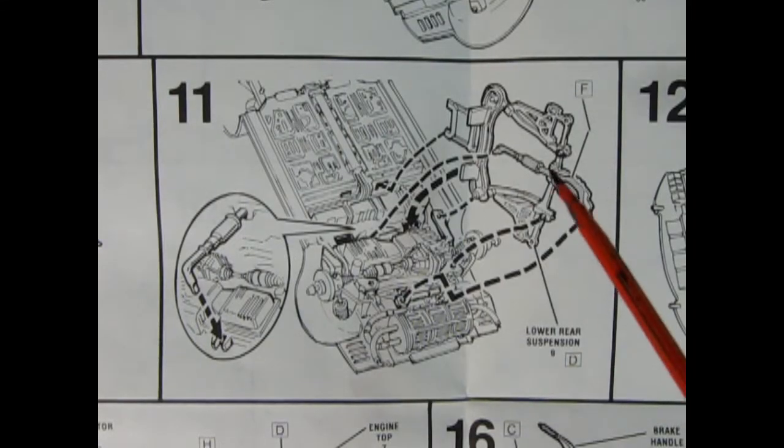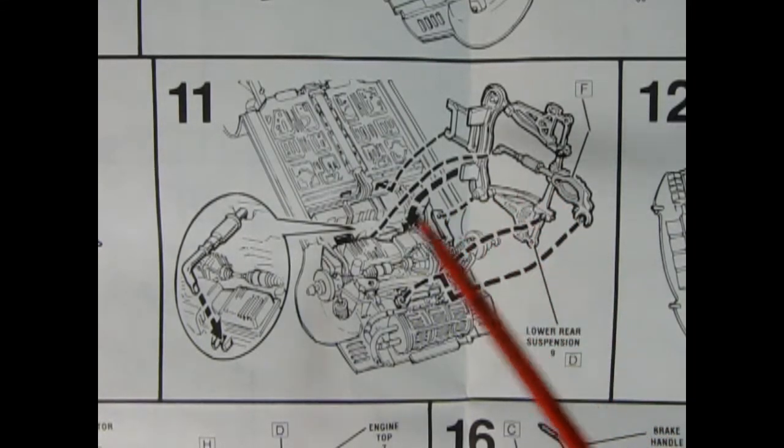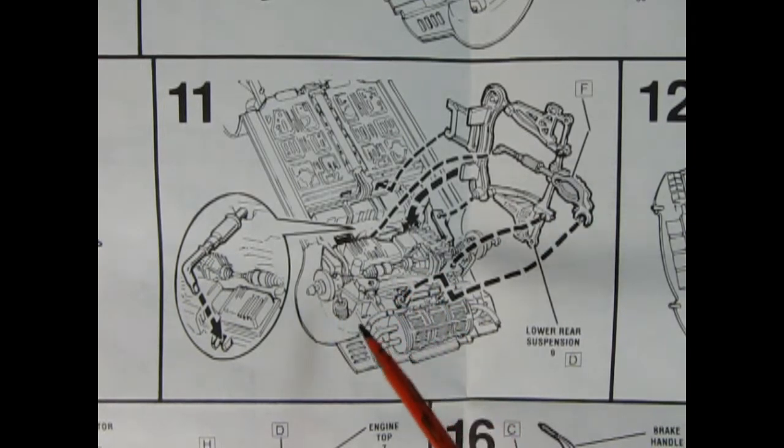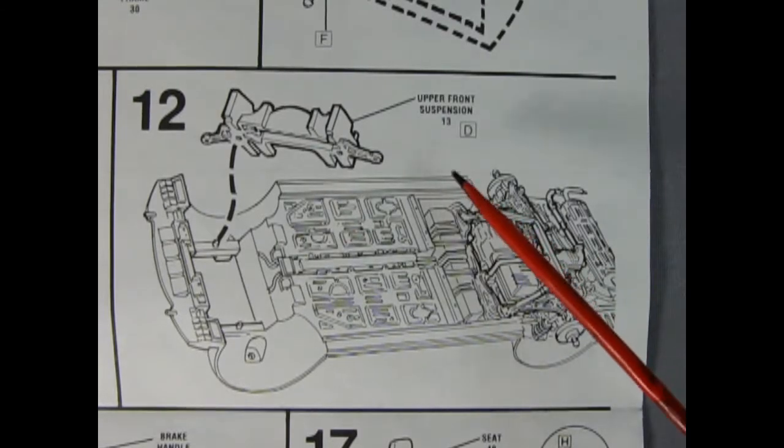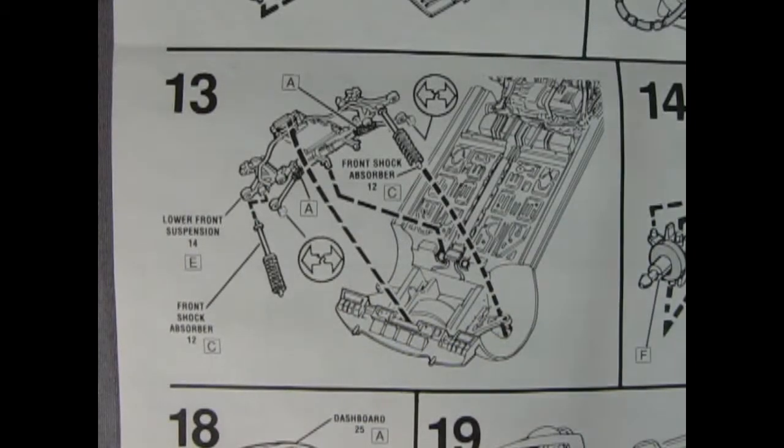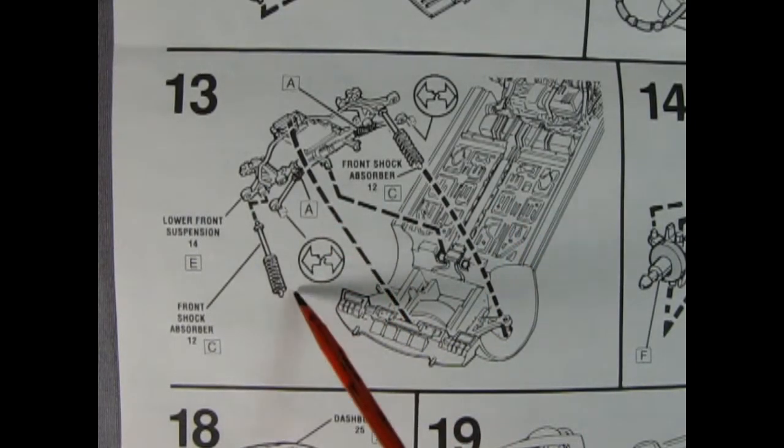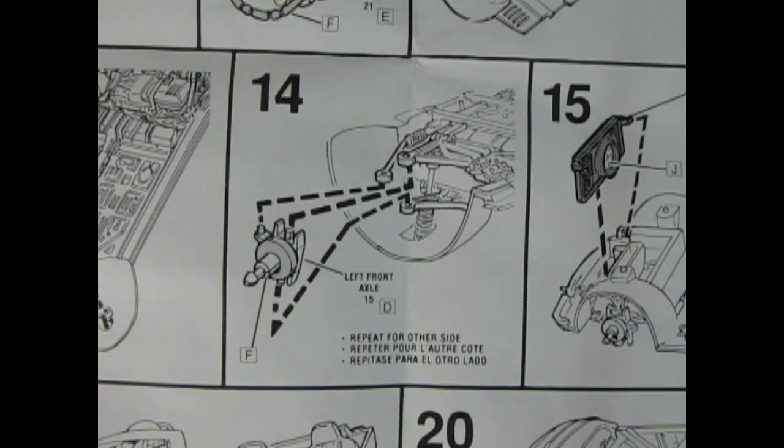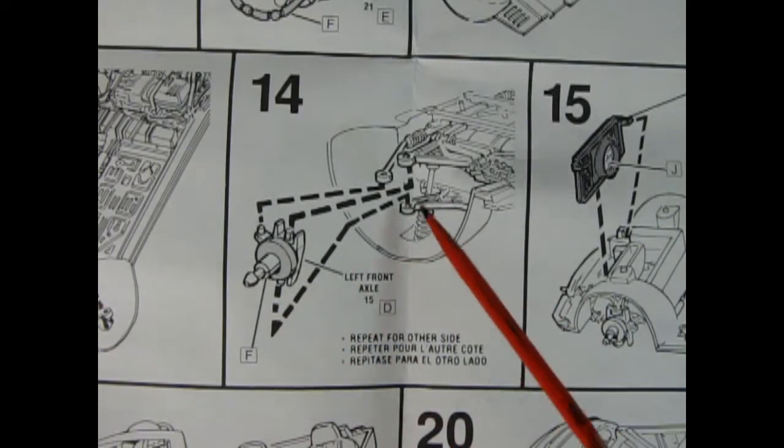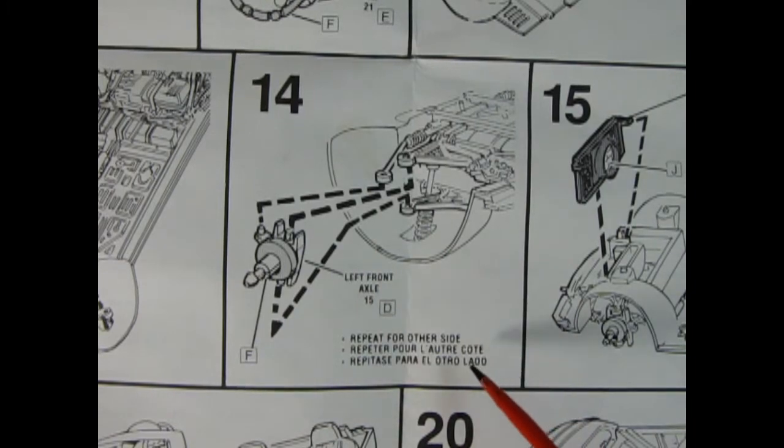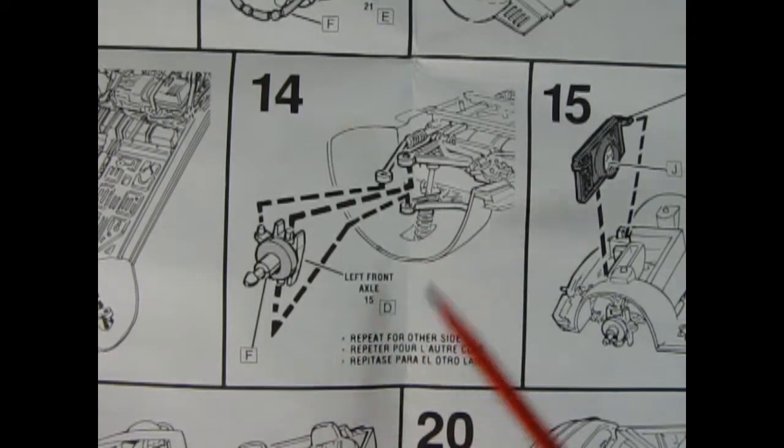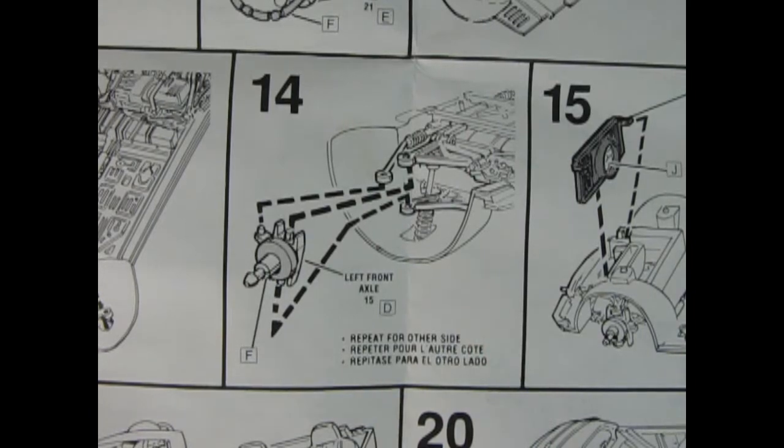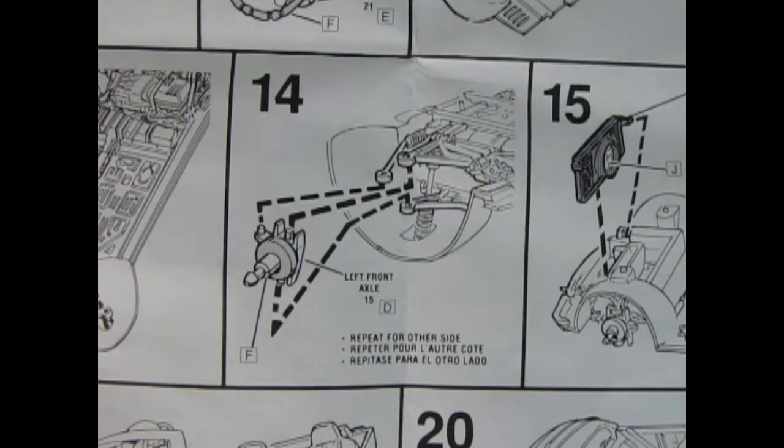Panel 11 shows the rear suspension component being clicked into place on the bottom of our chassis. Remember we're looking at this from the bottom up, not the top down. Panel 12 shows our upper front suspension being clicked into place. In panel 13 we get our lower front suspension with these great shock absorbers all clicking into place on our chassis. Panel 14 shows our left front axle getting clicked in place and notice it says repeat for other side. They didn't actually duplicate this in panel 15 which is so unlike Revell instruction sheets I don't know what's going on.